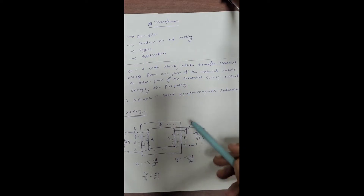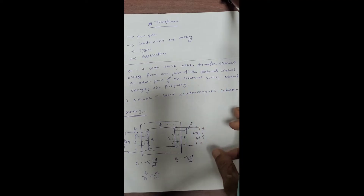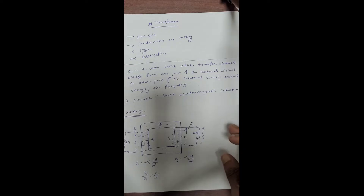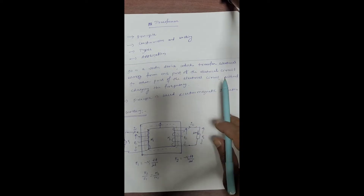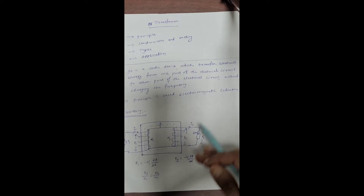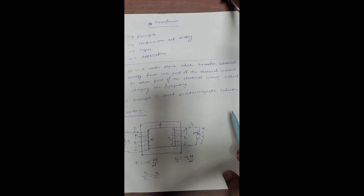Coming to the definition of transformer: a transformer is a static device which converts electrical energy or electrical power from one circuit to another circuit without change in frequency. Most important point — keeping frequency as constant, we can transfer electrical AC power from one circuit to another circuit. The principle is based on Faraday's law of electromagnetic induction.